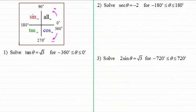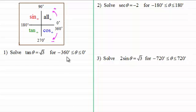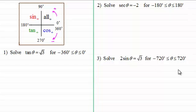In this video, I want to extend the work we've been doing on the Quadrant Rule, where I'm going to look at different ranges for our solutions. We've got ranges here going from minus 360 degrees to 0 degrees, a common one from minus 180 degrees to 180 degrees, and in this example, minus 720 to 720 degrees — this last one is going to have a lot of solutions.